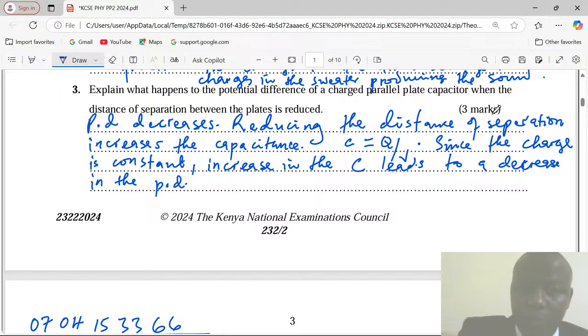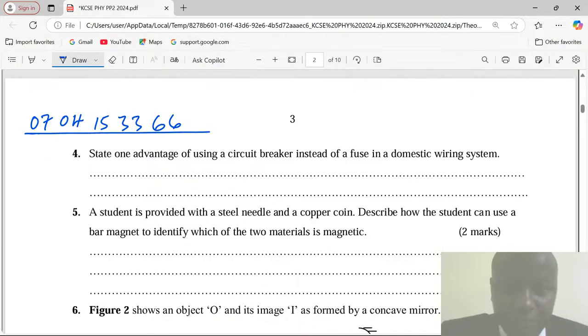Thank you, we proceed with number four. State one advantage of using a circuit breaker instead of a fuse in a domestic wiring system. Both can be used to safeguard appliances from excess currents, that is electric currents. But a circuit breaker has some advantages over the fuse and one of the advantages is that the circuit breaker can be reset for use.